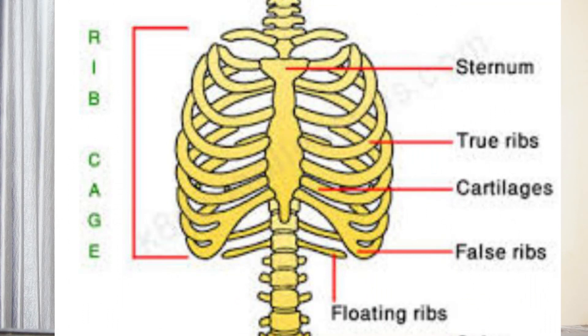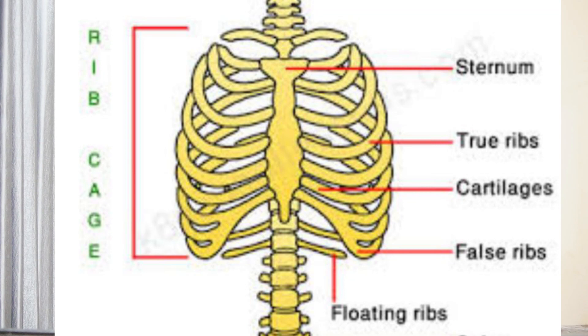The last four pairs of ribs are monocephalous, that is single-headed, without a tuberculum. The sternal portions of the first seven pairs of ribs directly articulate with the sternum, so they are called direct ribs or true ribs. The remaining ones are generally false ribs. Of these, the sternal portions of the eighth and ninth ribs do not directly articulate with the sternum but remain fused with the seventh sternal rib, so they are only indirectly connected with the sternum and are called indirect ribs. The sternal portions of the last three pairs of ribs neither reach the sternum nor articulate with other ribs, so they are called floating ribs.